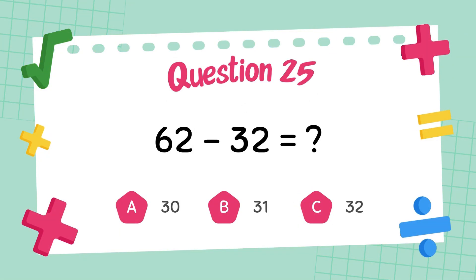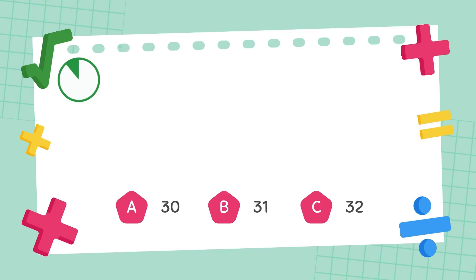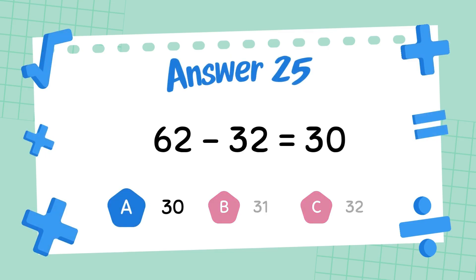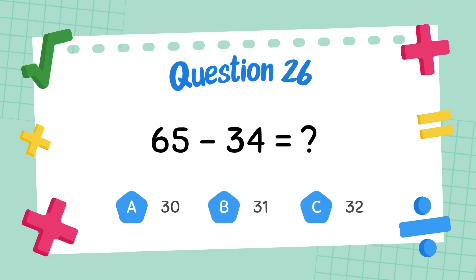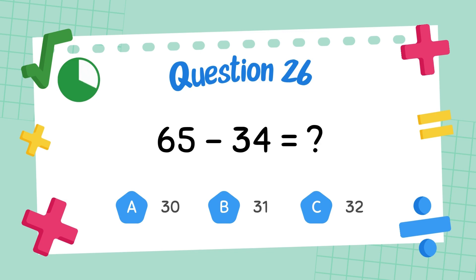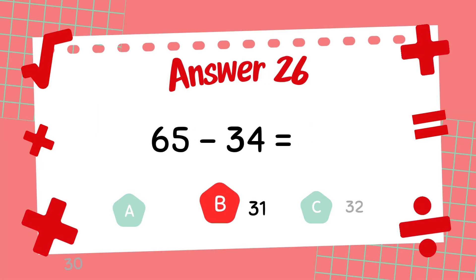What is 62 minus 32? The answer is 30. What is 65 minus 34? The answer is 31.